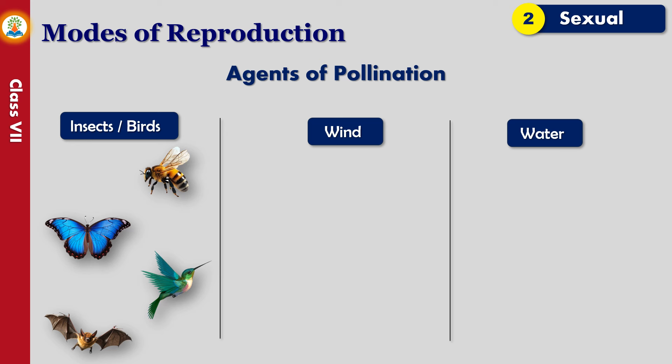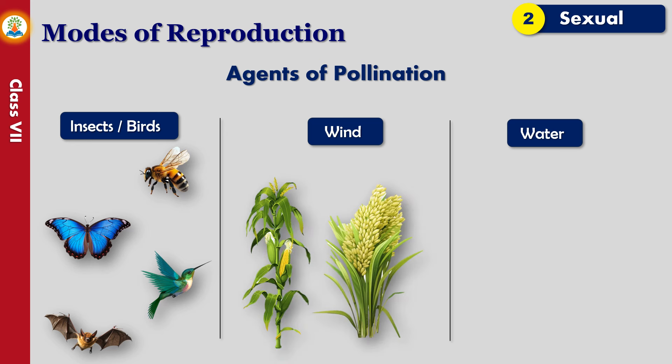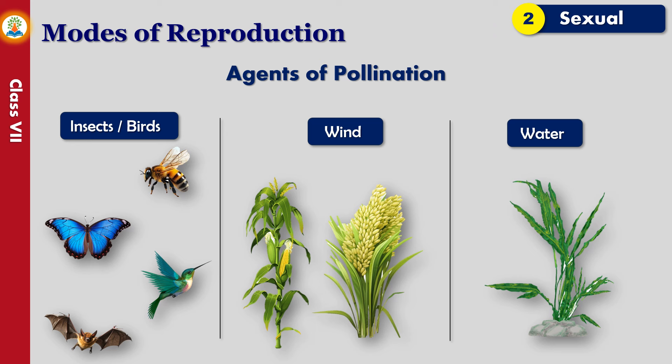When insects sit on a flower, pollen grains released from anthers stick to their body and get carried away to some other flower where they get deposited. Some flowers may not be colorful or have odor to attract insects or birds. These plants use wind as their agent of pollination, and the pollen grains from such plants are blown away easily as they are very light.